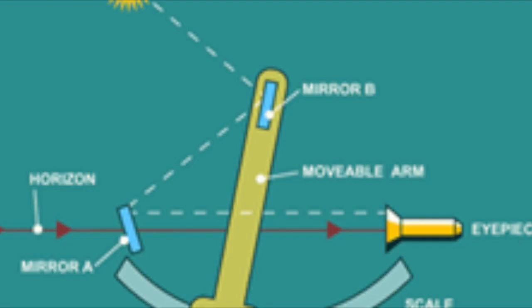Celestial navigators use a device called a sextant to determine the angle between a known star and the horizon. By using the angle, plus the time it was measured, you can calculate your position.